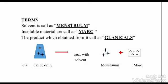Some important terms: in extraction, the solvent in which we treat the crude drug is called the menstruum. After extraction, the insoluble material that is left behind is called marc. To take an example from daily life — consider tea. When we make tea, we treat it with a solvent like water.